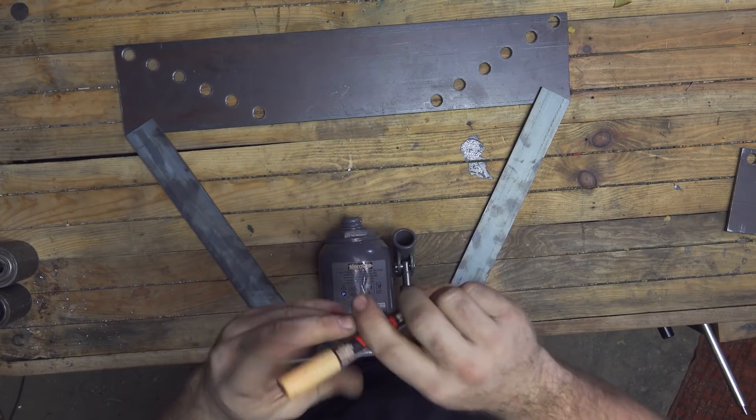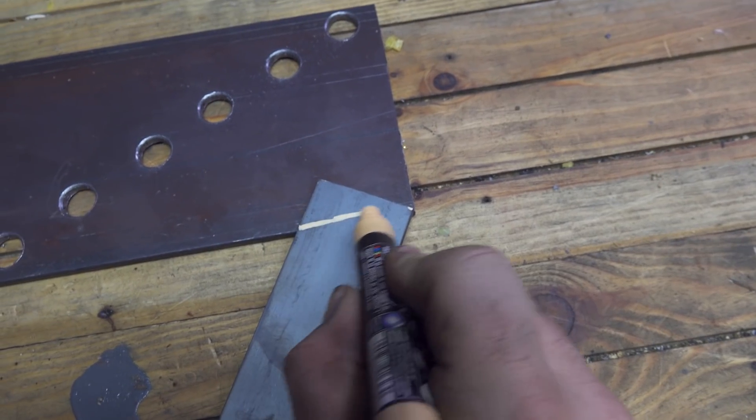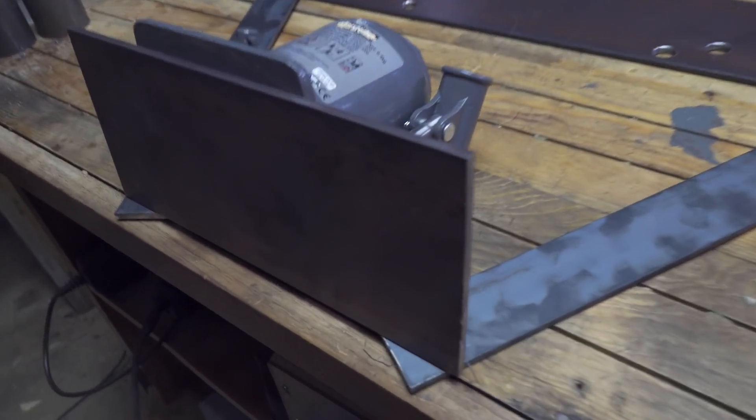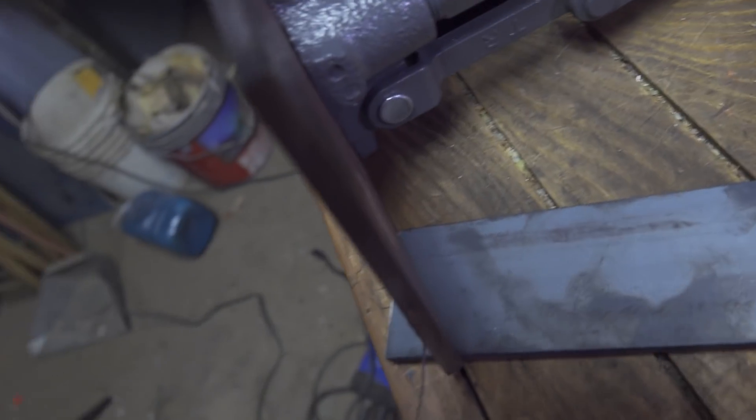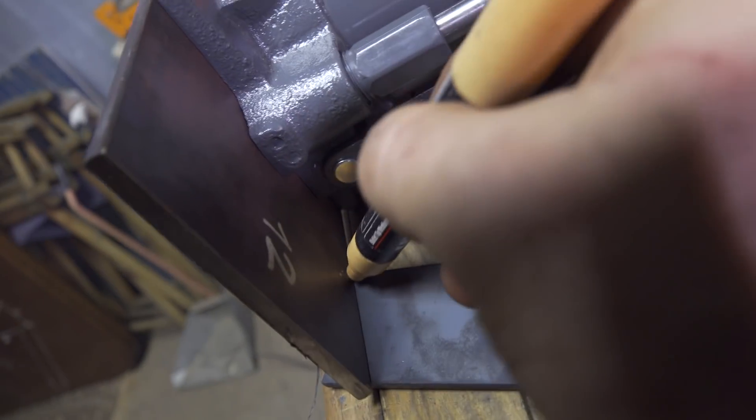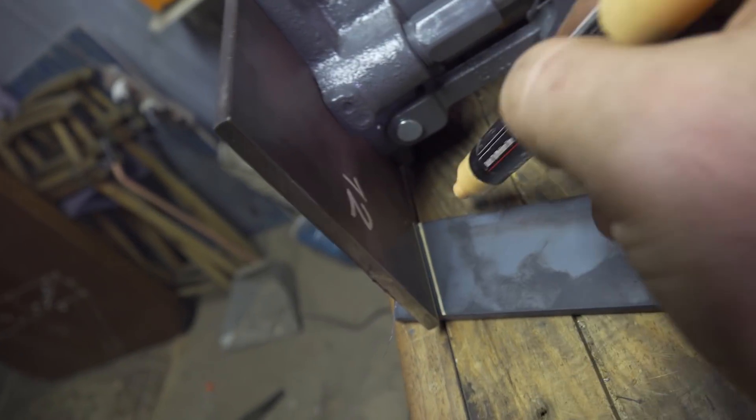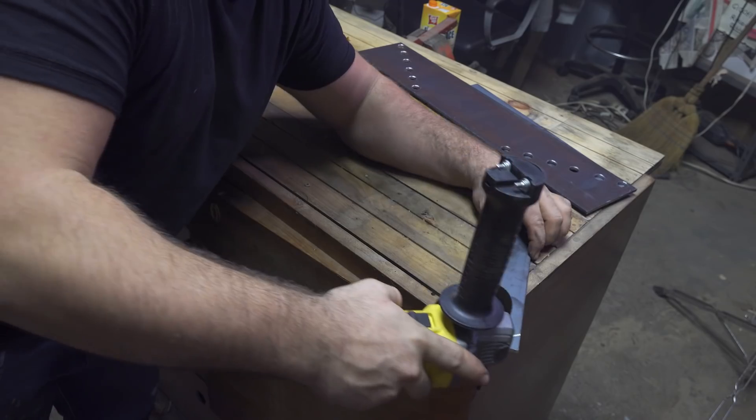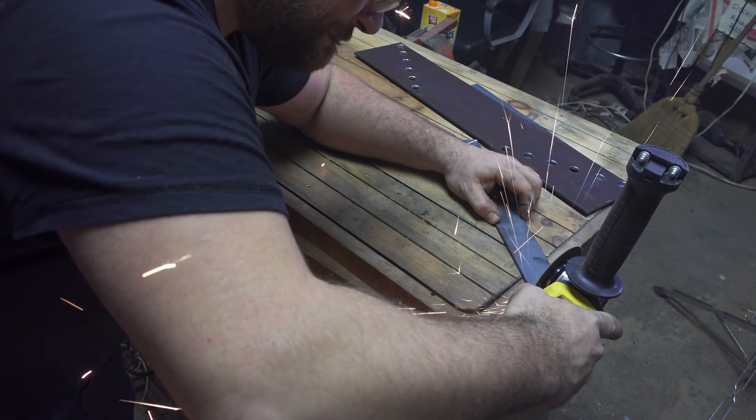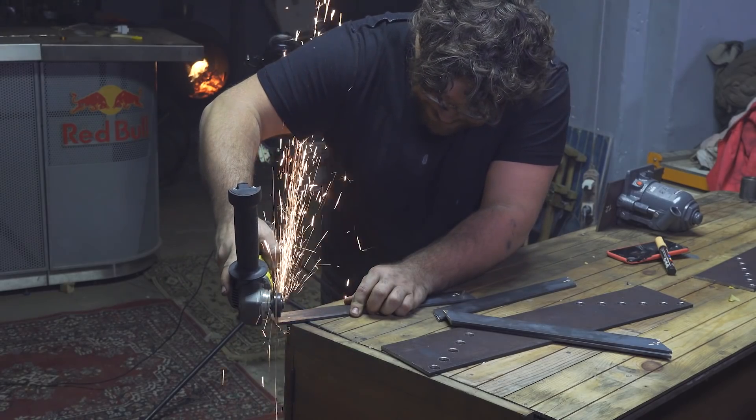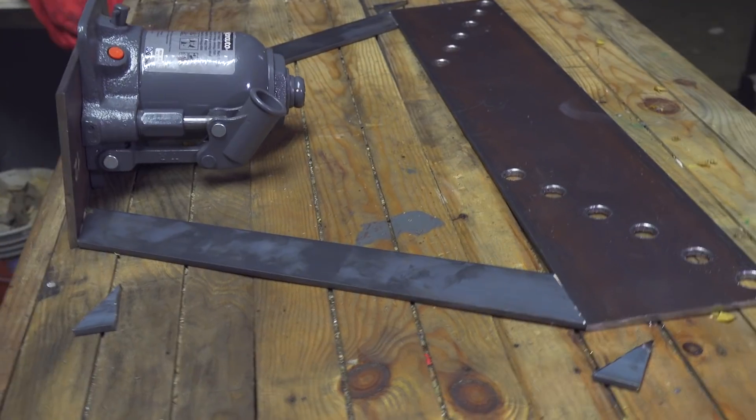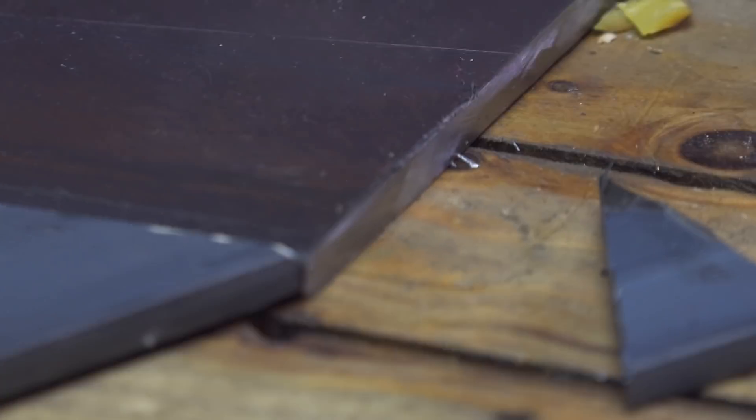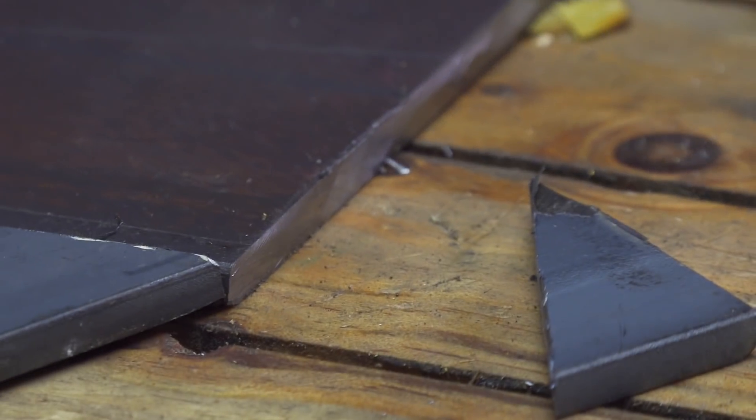I could do some math to calculate the angle where I need to cut these brackets, but I prefer to use a marker and just mark where I need to cut. This way I save time, and if I do it slowly and precisely, I'll end up with perfect alignment of all the parts.